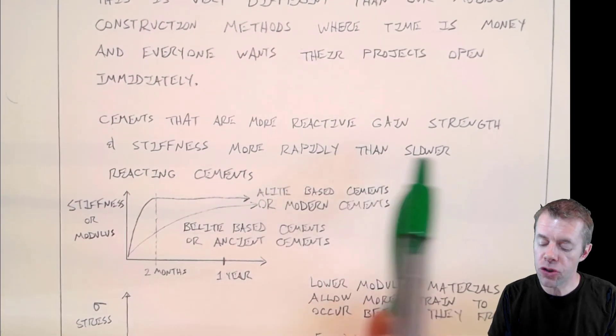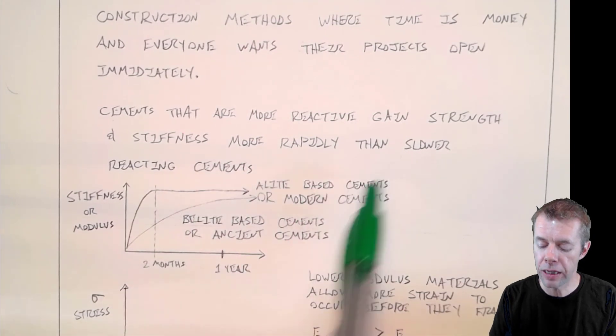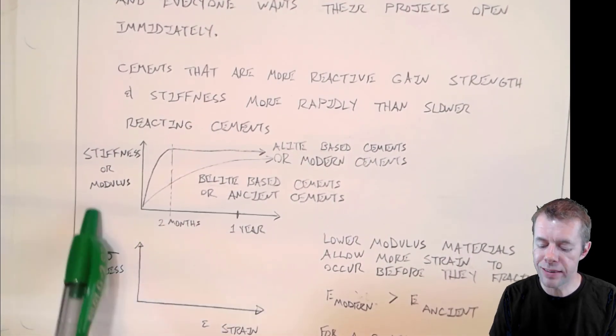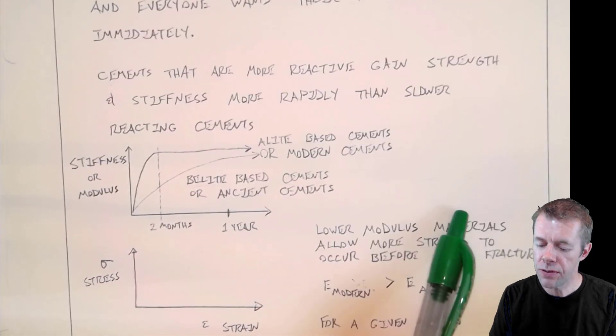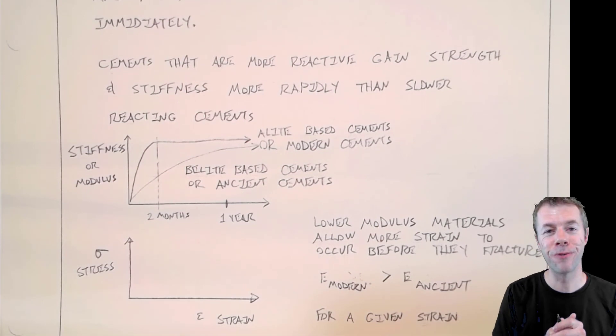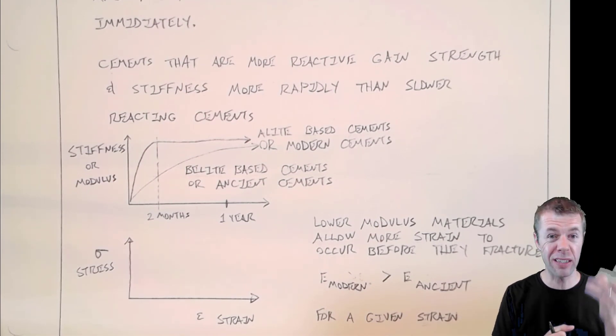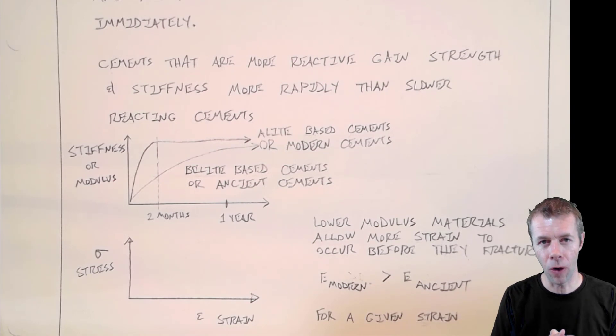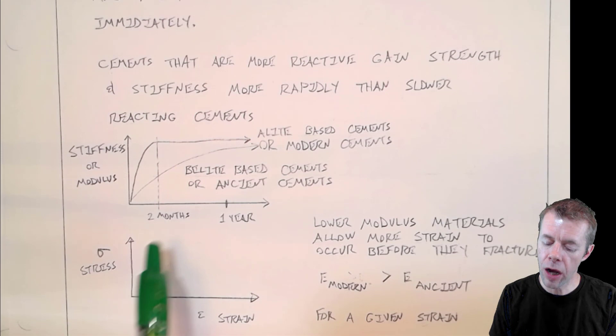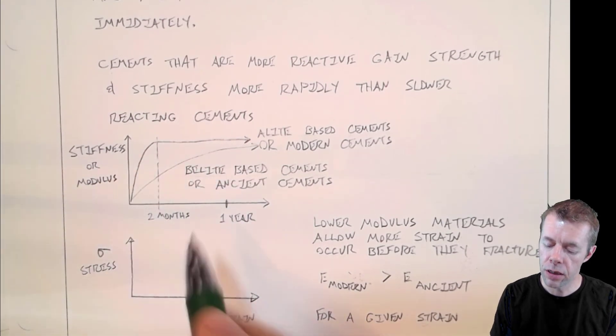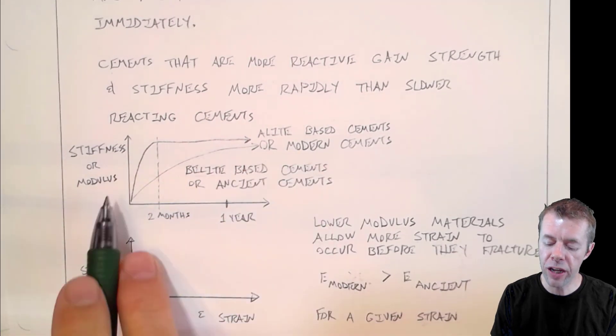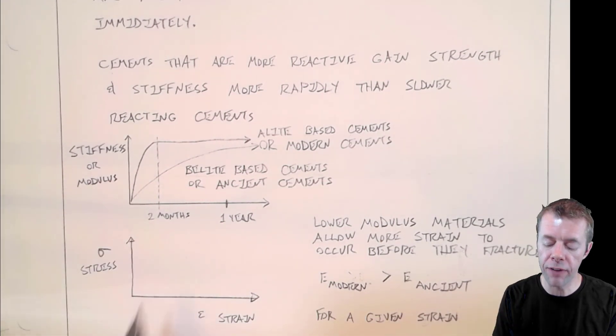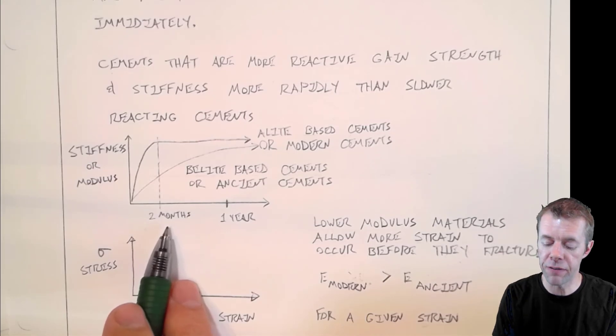Here's some more lessons. Cements that are more reactive gain strength and stiffness much more rapidly than slower reacting cements. What do I mean by that? Well, I've plotted time here on the x-axis, and I've plotted stiffness or modulus. This is like how squishy something is, right? Something like concrete is pretty stiff. Something like steel is even stiffer. And something like play-doh is not very stiff at all. And what this is showing here is that our modern cements follow this top line.